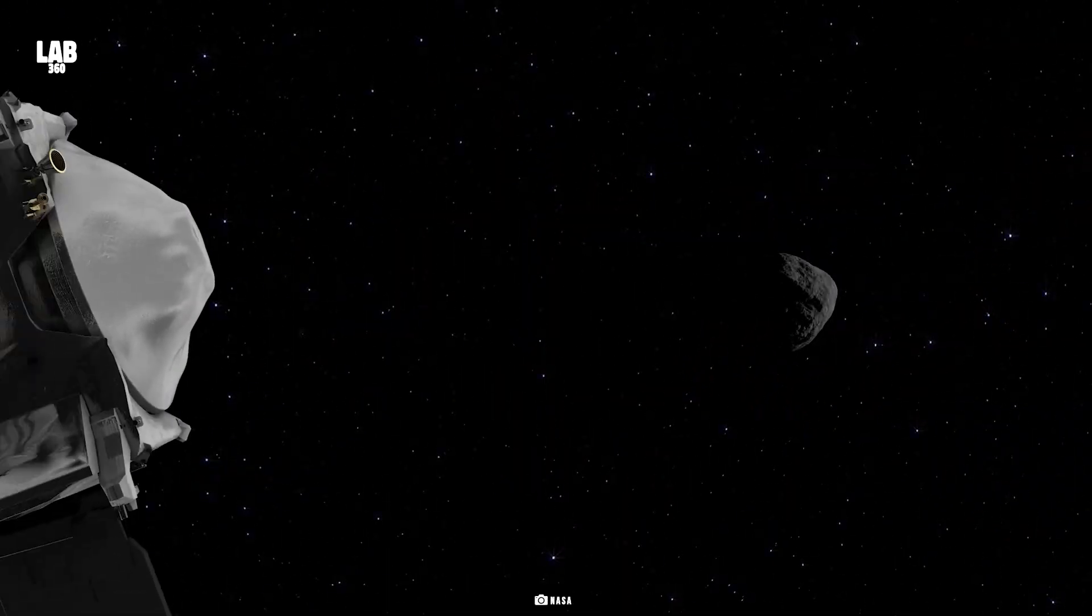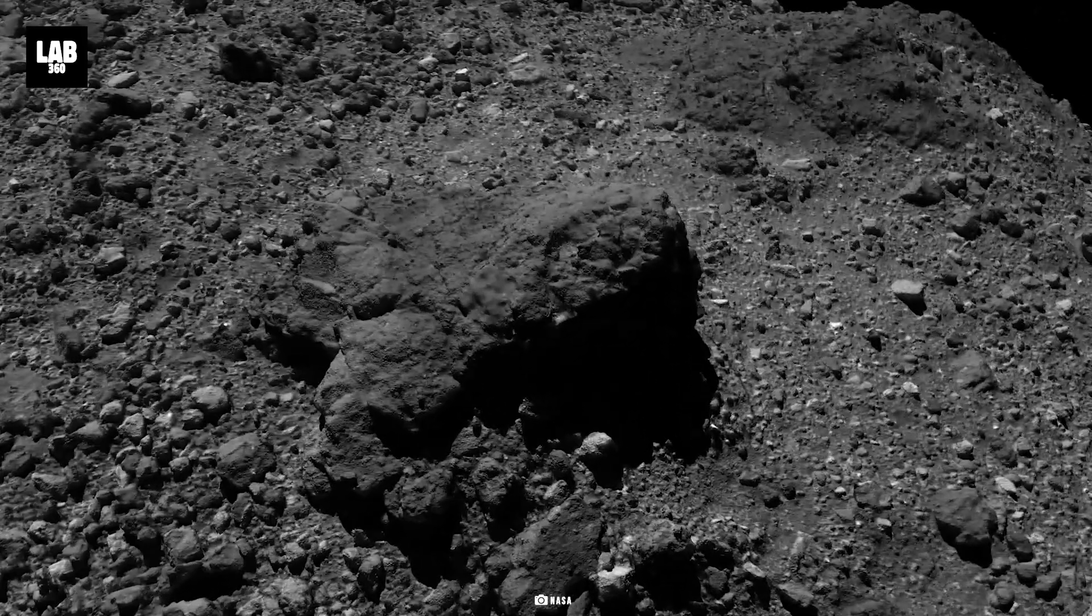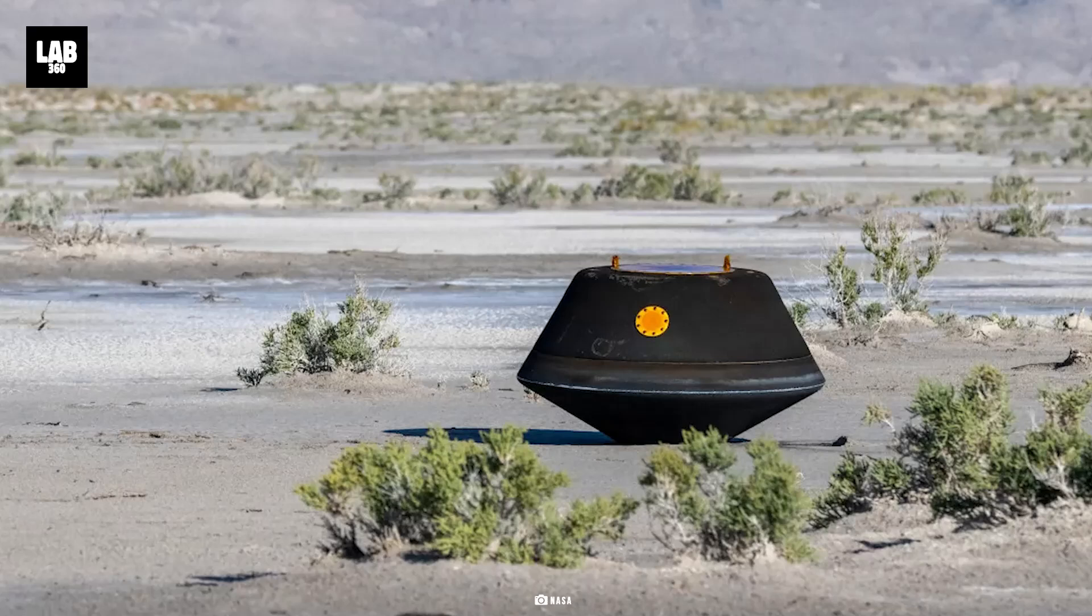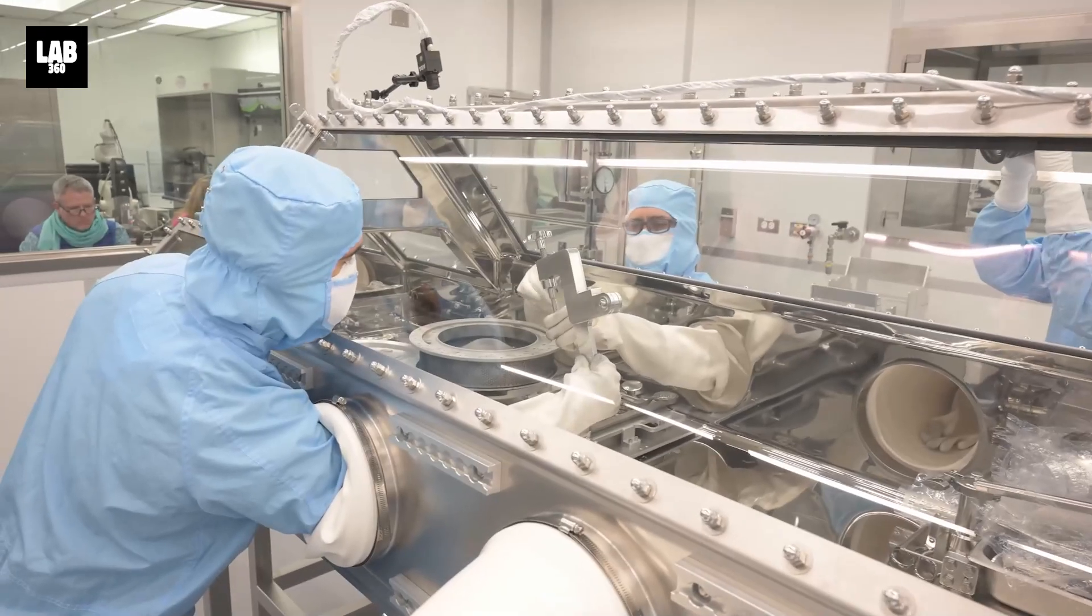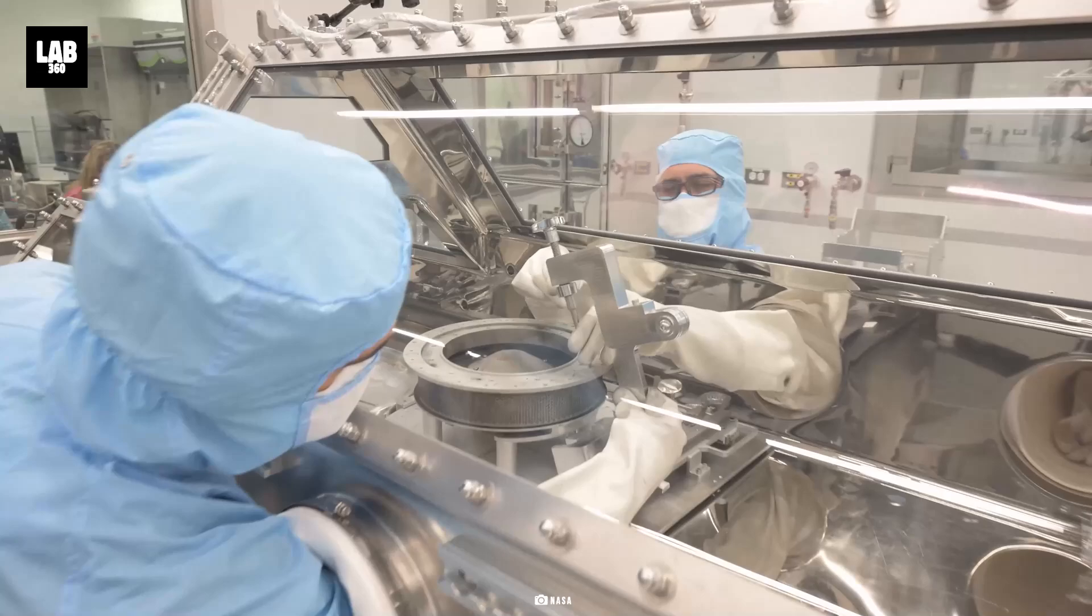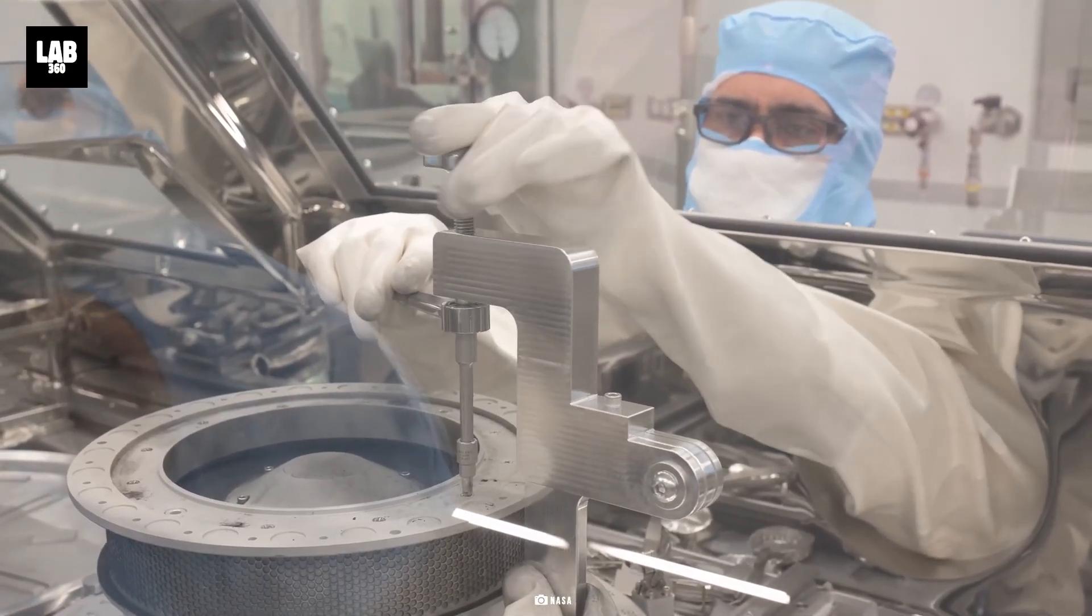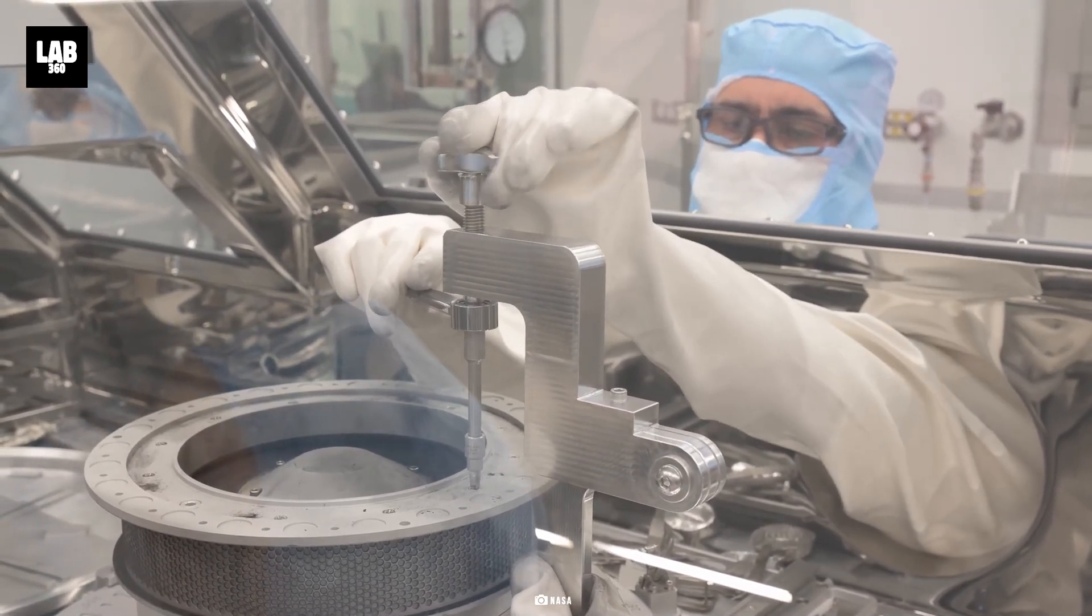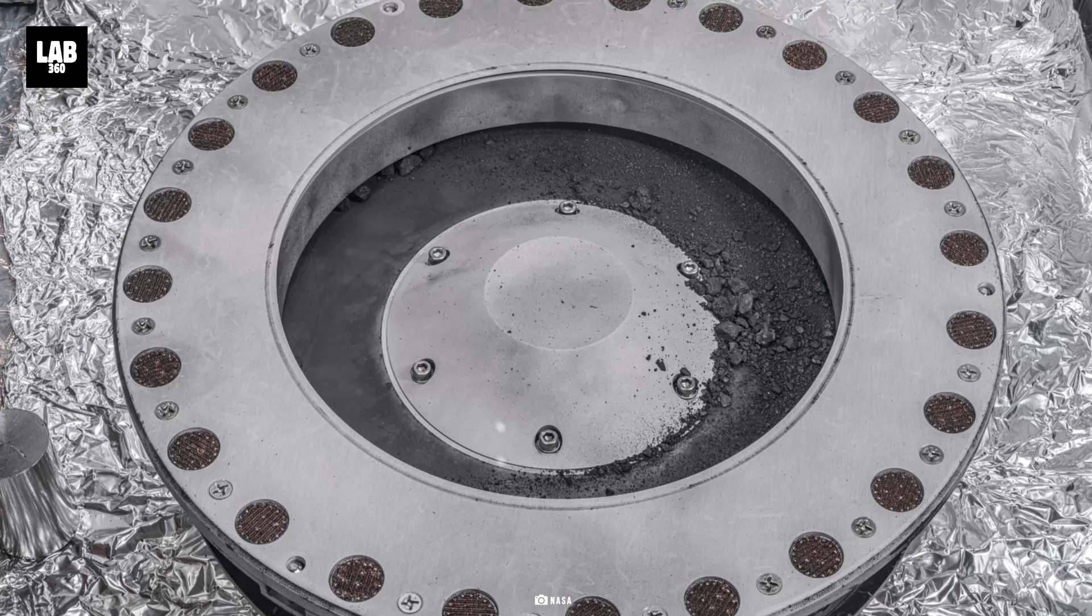In 2018, the spacecraft landed on Bennu, and in 2023 it dropped off the sample into the Utah desert. However, it didn't land. The Astro Materials Curation Team at NASA's Johnson Space Center in Houston collected 2.48 ounces of asteroid material from the sample hardware, even before removing the lid. The team then removed two stubborn fasteners.